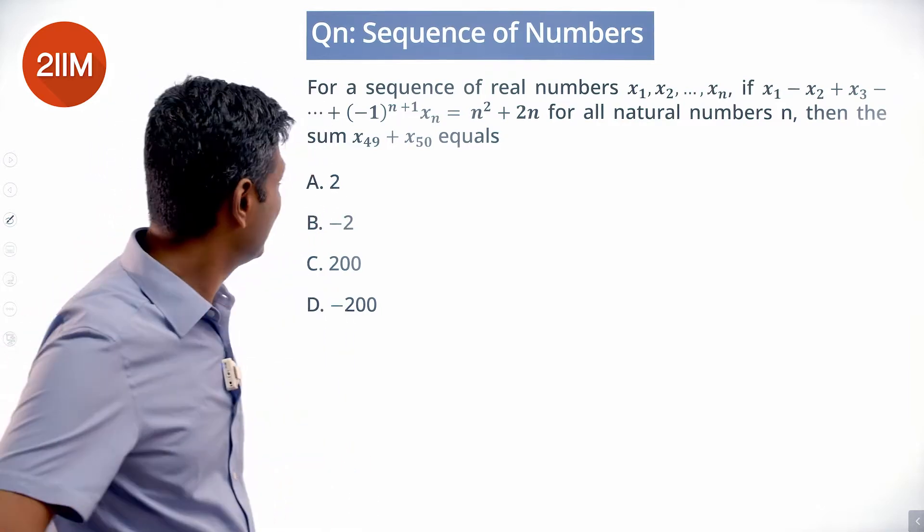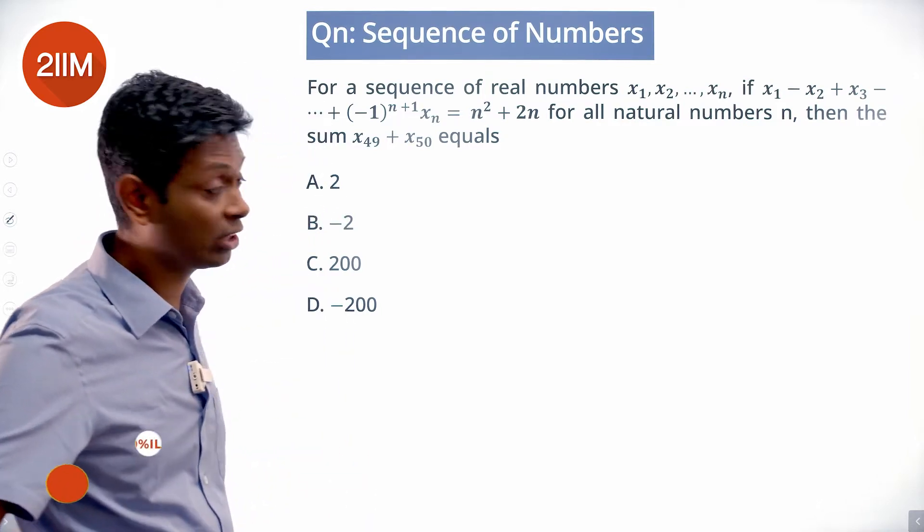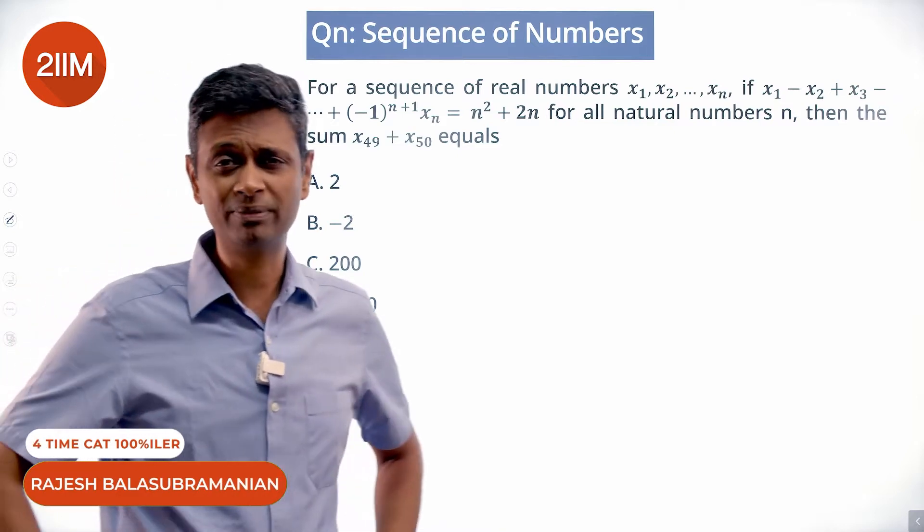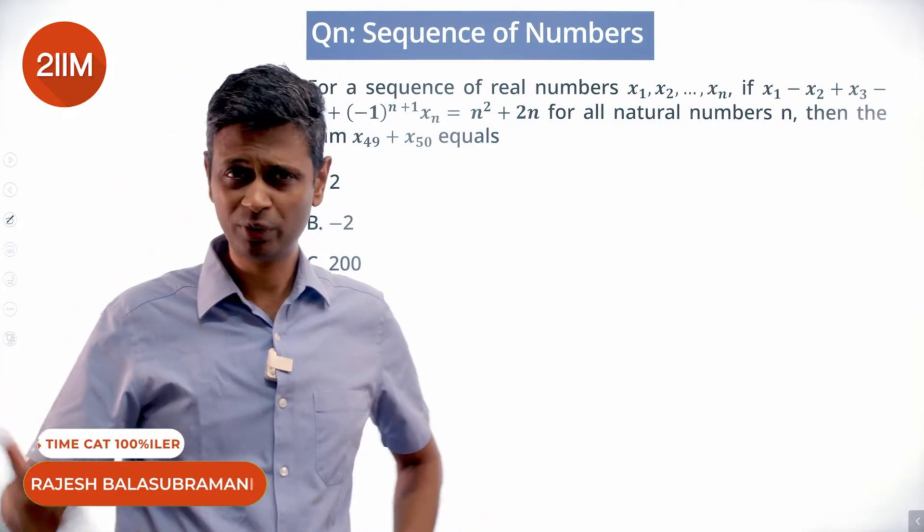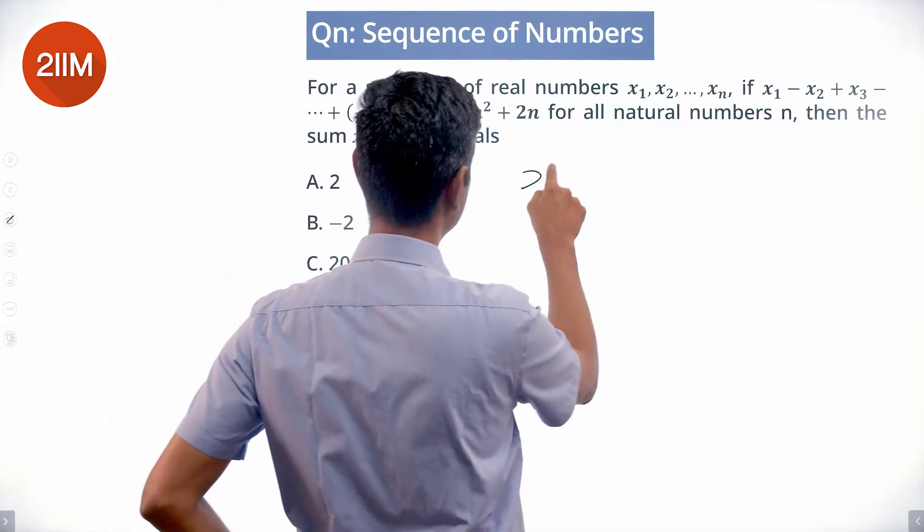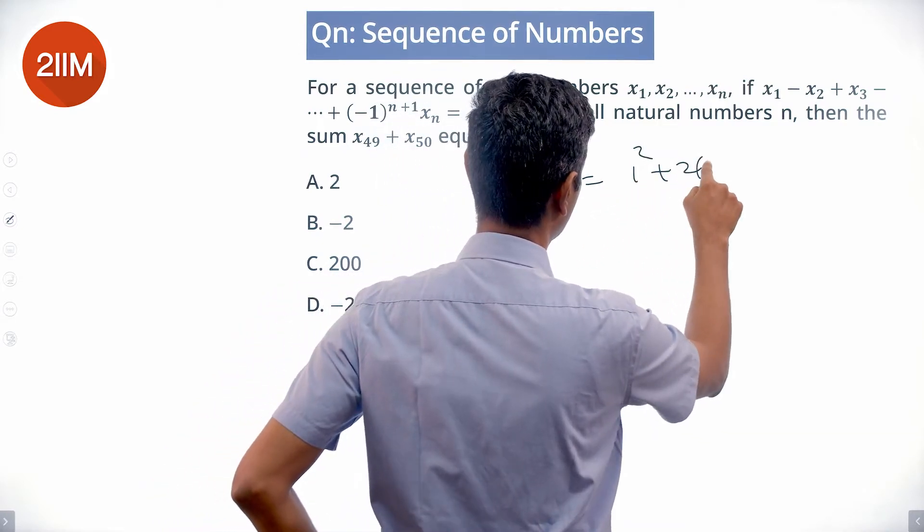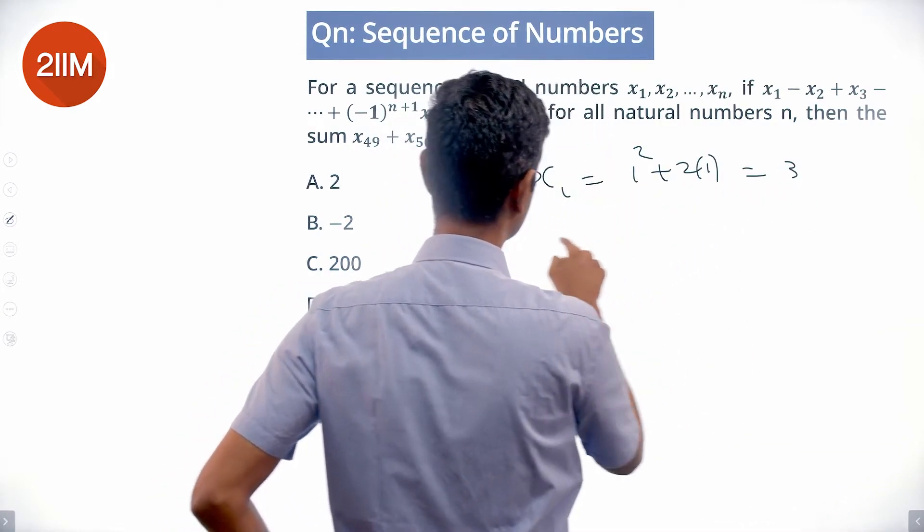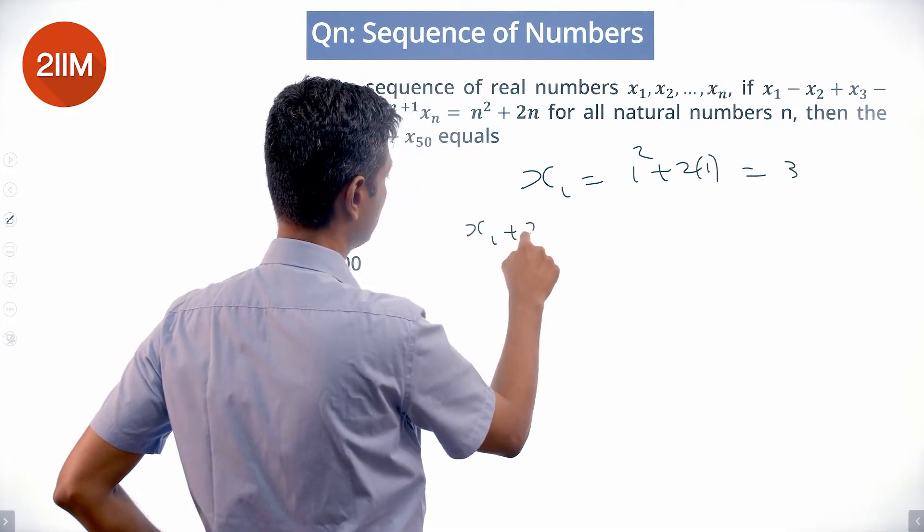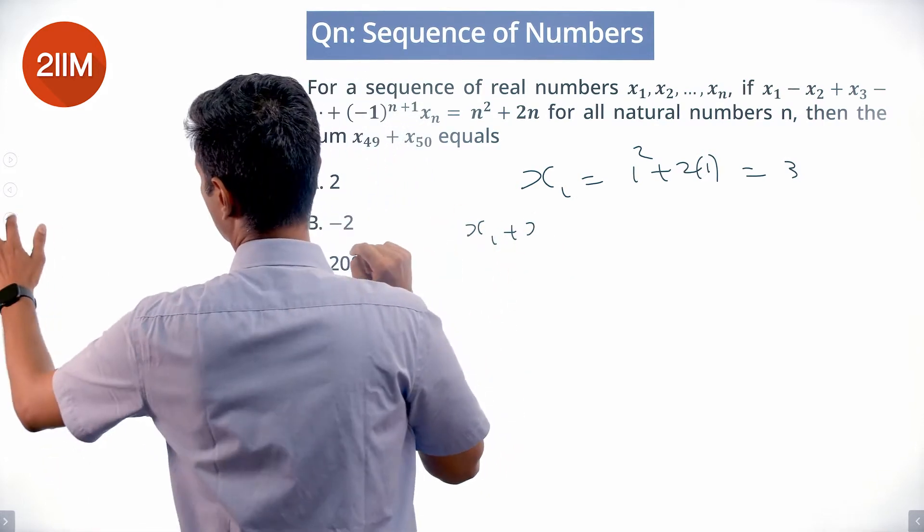All these questions, simple rule of thumb: find x1, find x2, find x3. x1 should be 1 squared plus 2 times 1, which is 1 plus 2, equals 3. x1 minus x2...